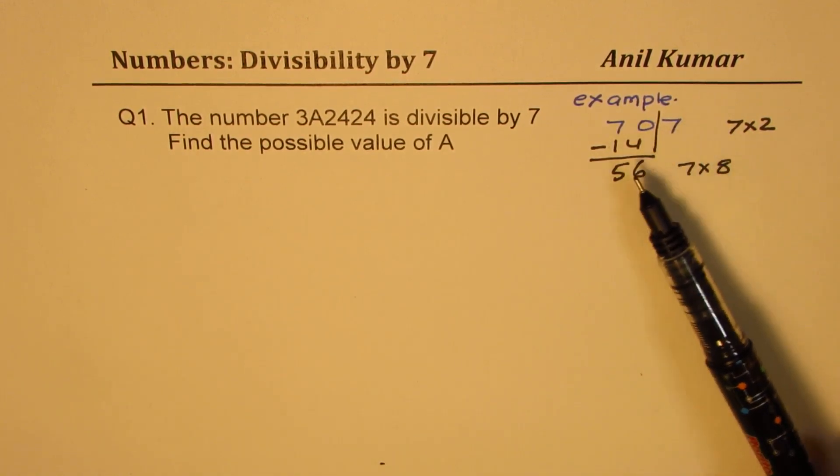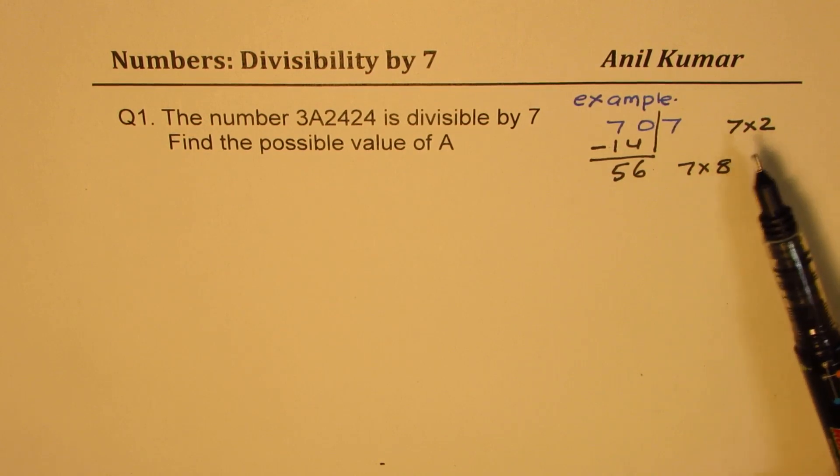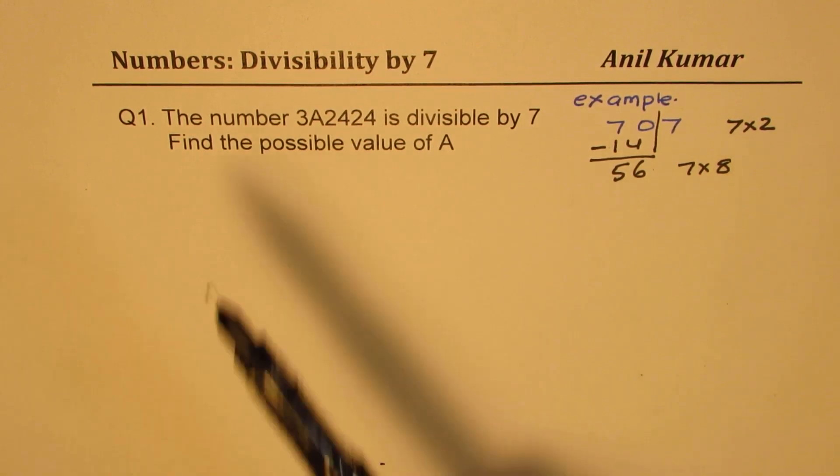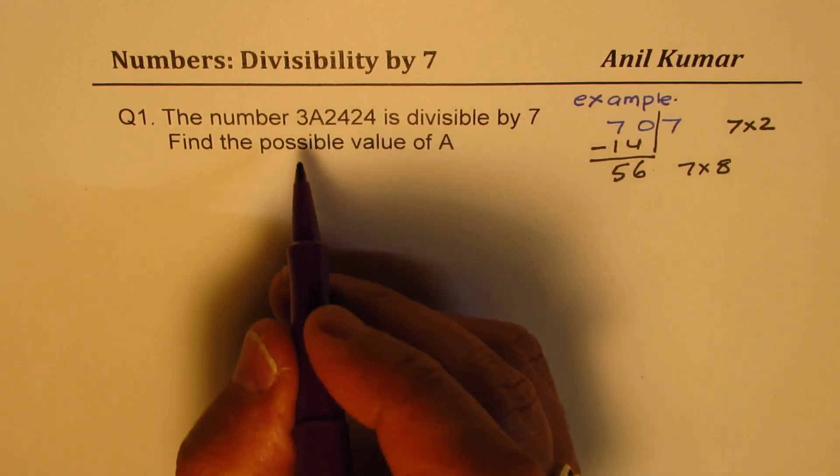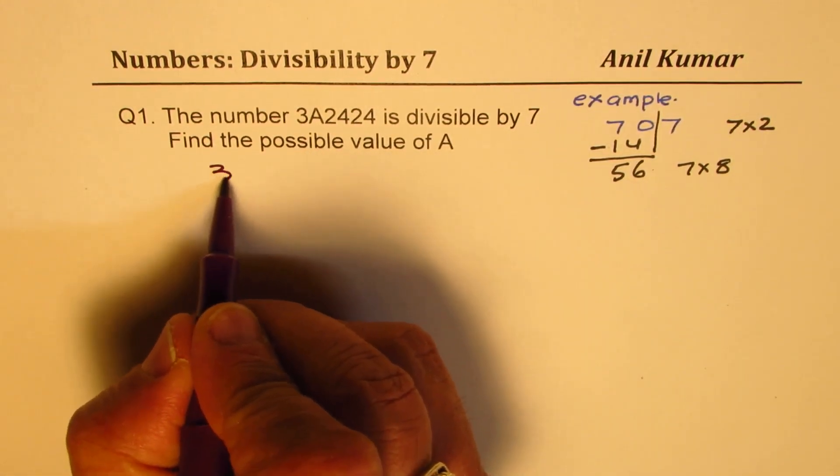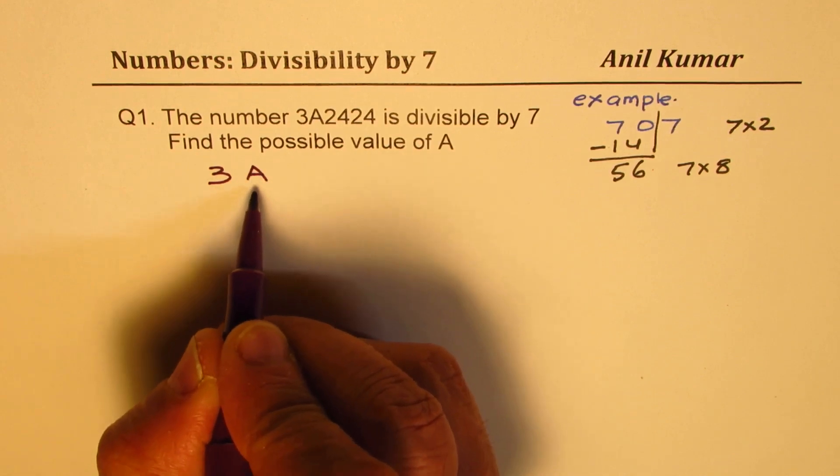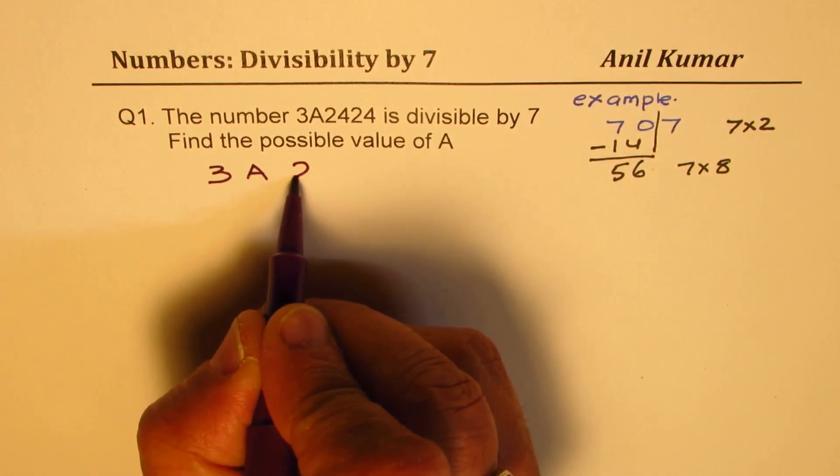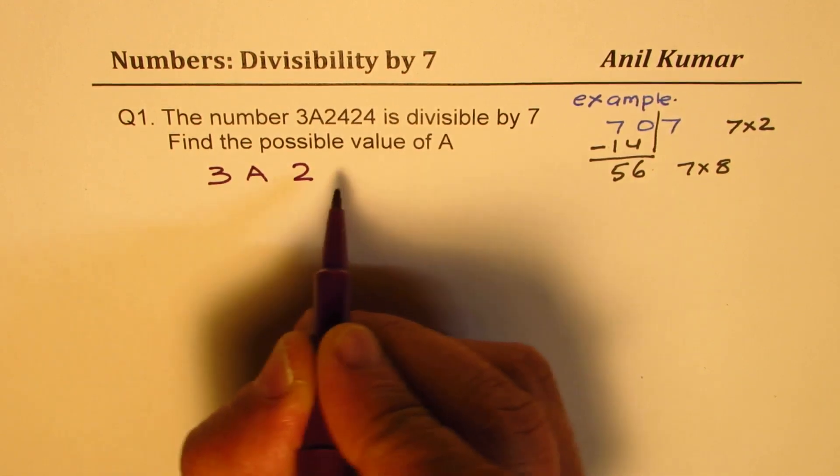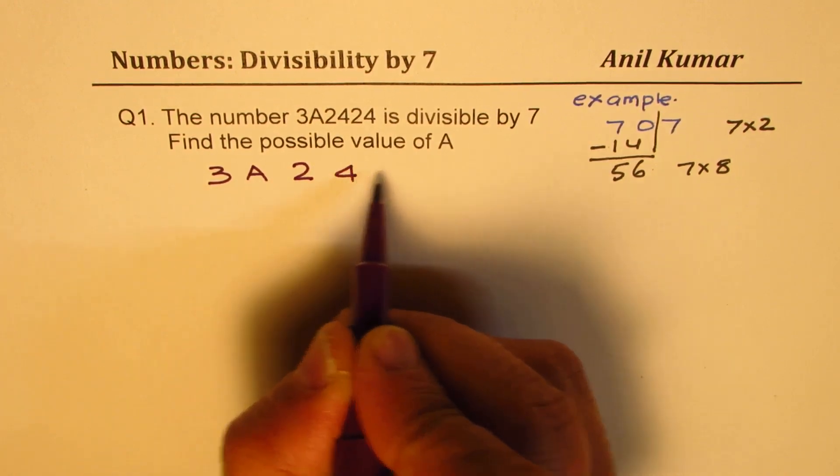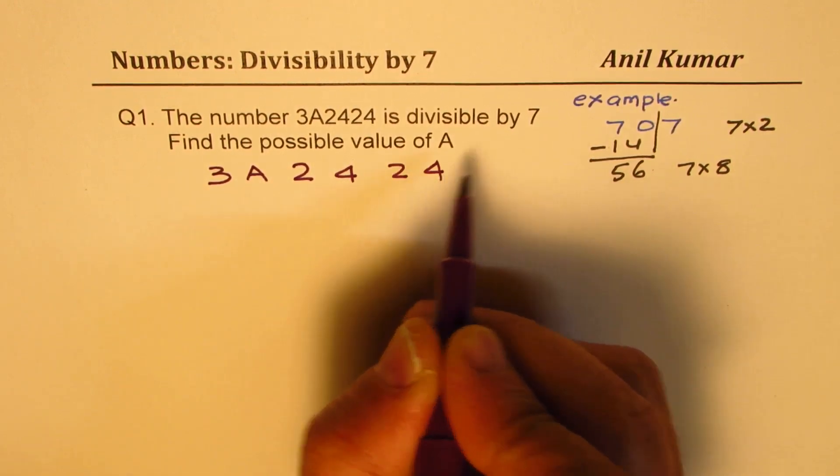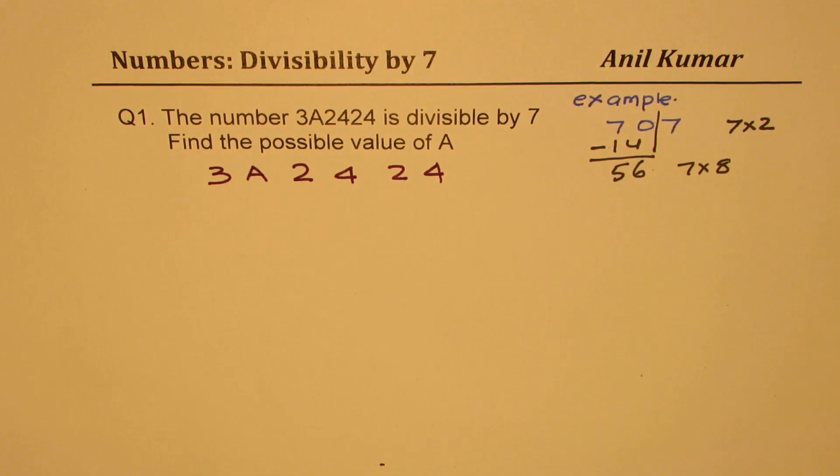Now 3, 4 digit numbers are very simple to do and in just one or two steps you can do it. But here we have a very tricky situation. We have a bigger number plus we have an alphabet. The number is not known to us. We need to figure out A so that the whole number is divisible by 7. That is the real question.